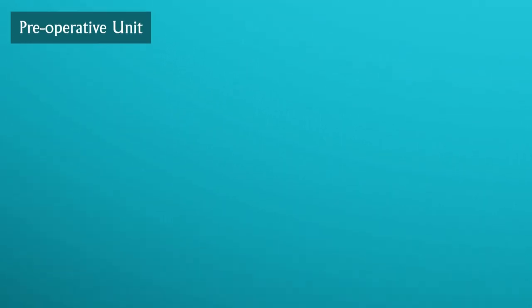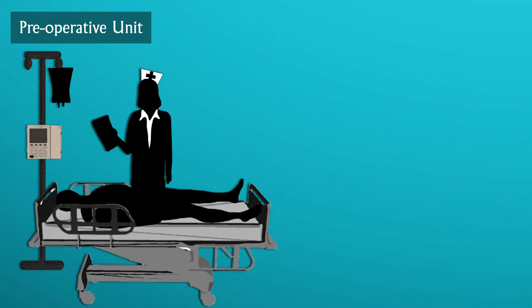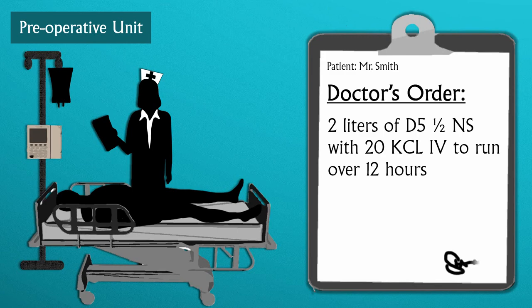Mr. Smith is being admitted in the pre-op unit for a coronary artery bypass graft of three vessels. You have an order for two liters of D5 and a half normal saline with 20 potassium chloride IV to run over 12 hours.